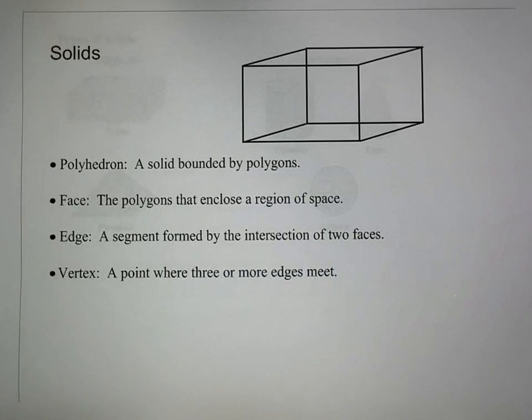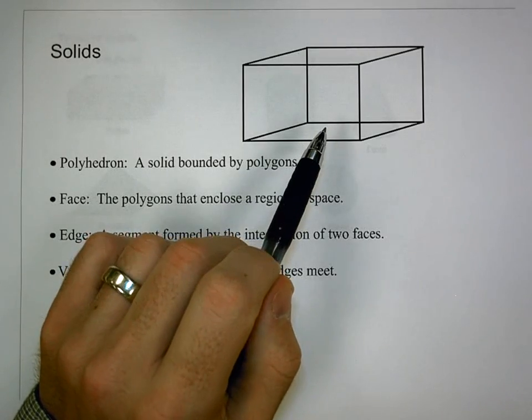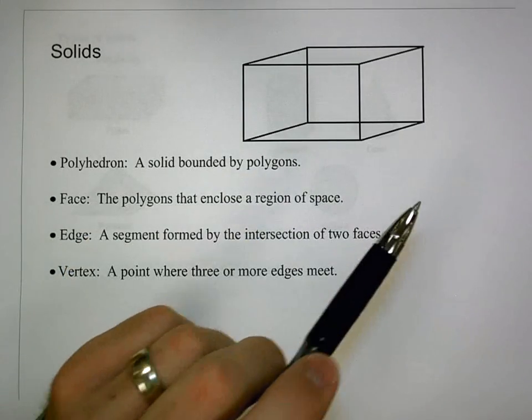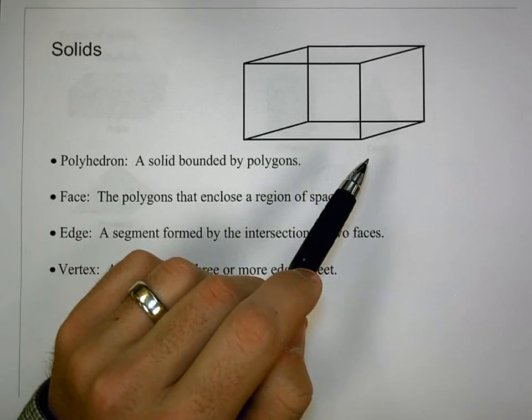First off, we're going to look at our family of polyhedrons. Now, these are going to be solids bounded by polygons, and a basic example we have of that is a rectangular prism, which we have right here. If we look at the rectangular prism, you would think of it like a box, it's made up of all rectangles.